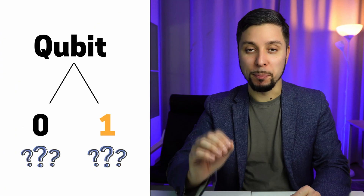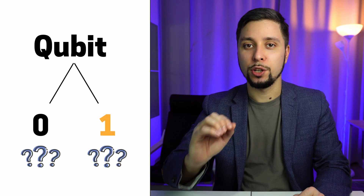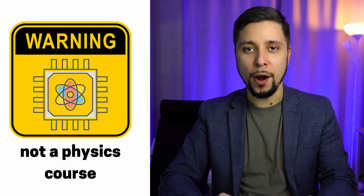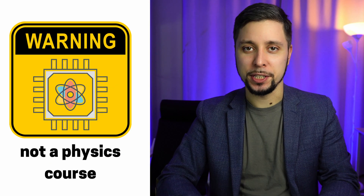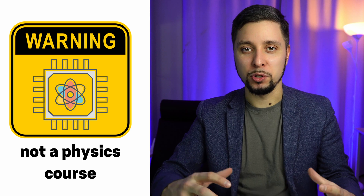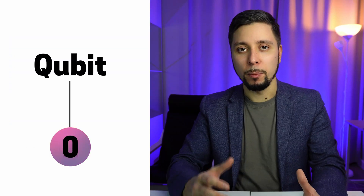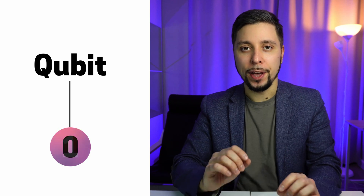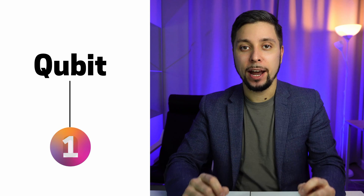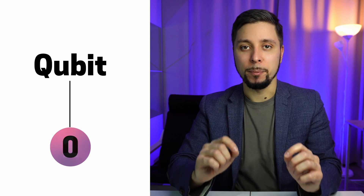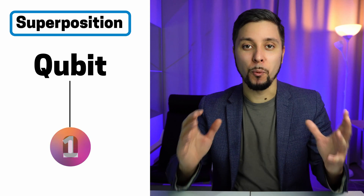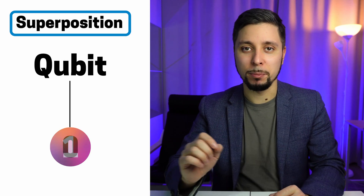Quantum computers, instead of bits of information, use qubits — that stands for quantum bits — which are represented by subatomic scale components. I won't go into quantum physics in this video; I just want to give you an insight into how qubits work. Classical bits can be in either a 0 or 1 state. What is interesting about quantum computing is that qubits can be in both states at once, because of a property called superposition, and this is precisely why they can compute a lot more information at the same time.